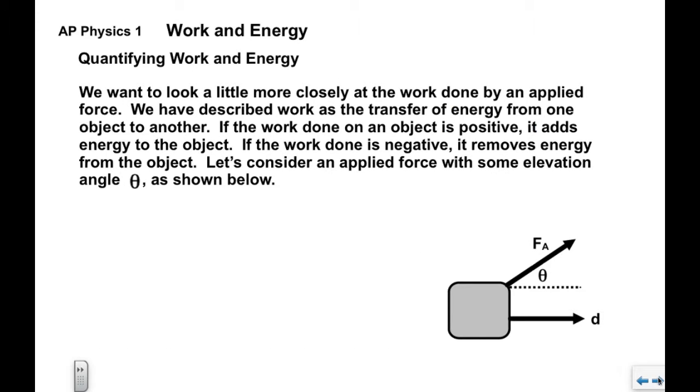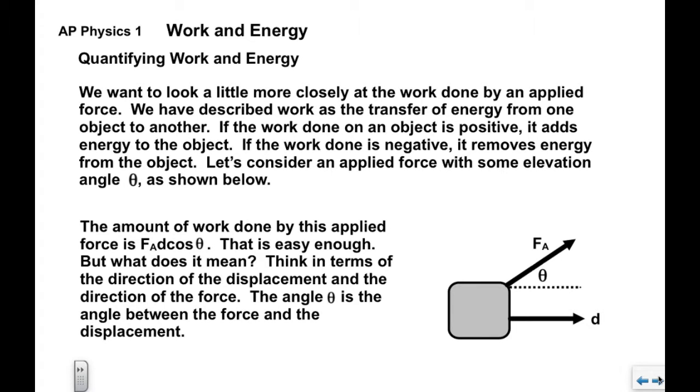Now we want to take a closer look at the work done by the applied force. We have described work as the transfer of energy from one object to another. If the work done on an object is positive, it tends to add energy to the object. If the work done is negative, it removes energy from the object. Let's consider an applied force with some elevation angle theta. We've got a displacement to the right and an applied force to the right and up. The amount of work done is F A times d times cosine of theta. We want to think about what that means.